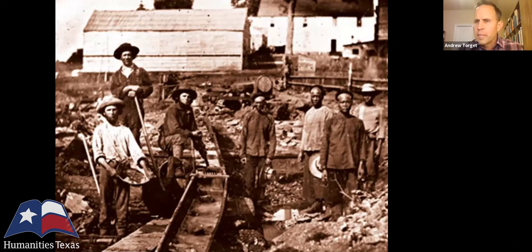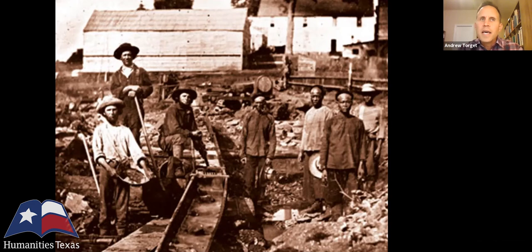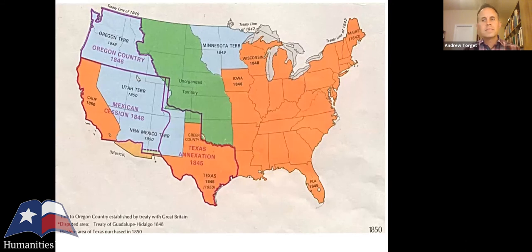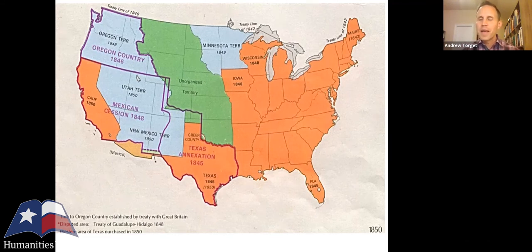Most people thought the question wouldn't be immediate — not many were moving to Arizona or New Mexico anytime soon. But gold was discovered in California in the late 1840s, and enough people poured out there that California had enough population to petition for statehood, which was a much better situation than being a territory. California petitioned to join the United States as a free state, forcing both northerners and southerners to confront immediately what this meant for the balance of power in the U.S. Senate.